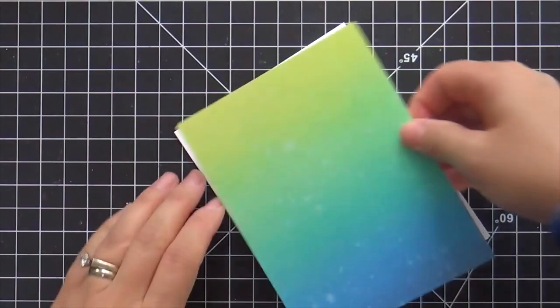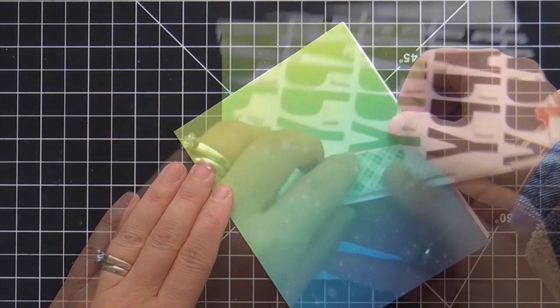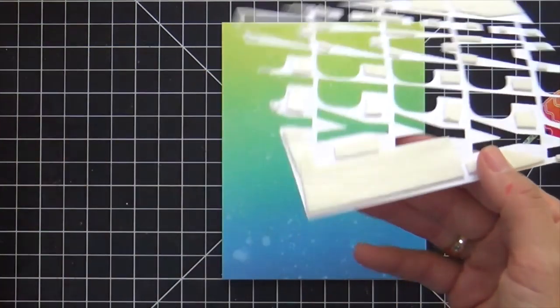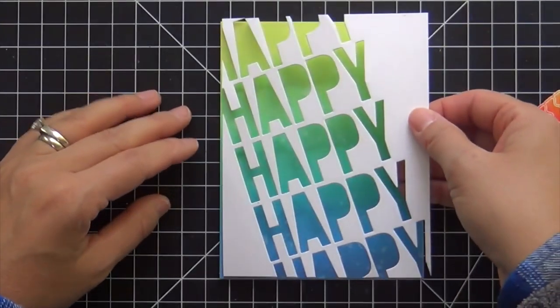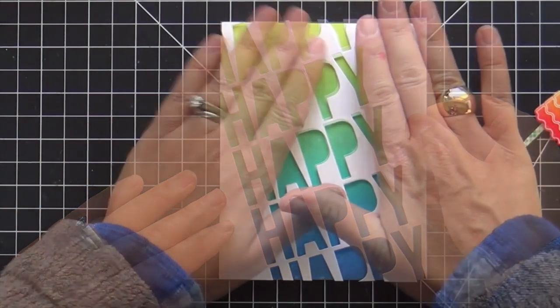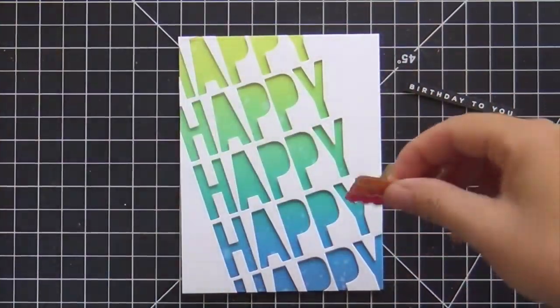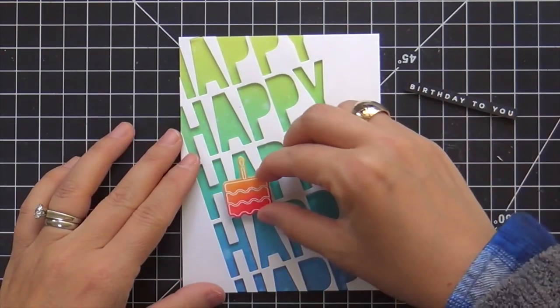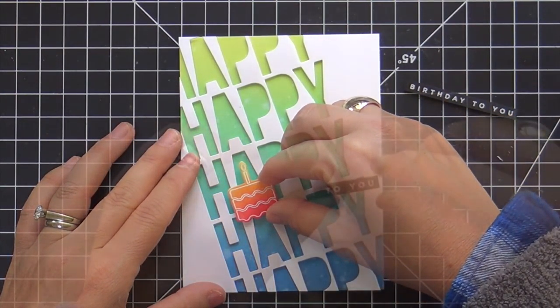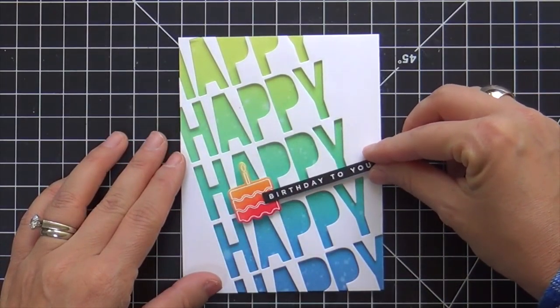cake. I'm going to start assembling everything, putting some tape runner on my card base, adhering the blended background. Now I popped up this happy panel. I'm not even going to tell you how long it took me to put slivers of foam tape on the back, but it's all worth it if you ask me.